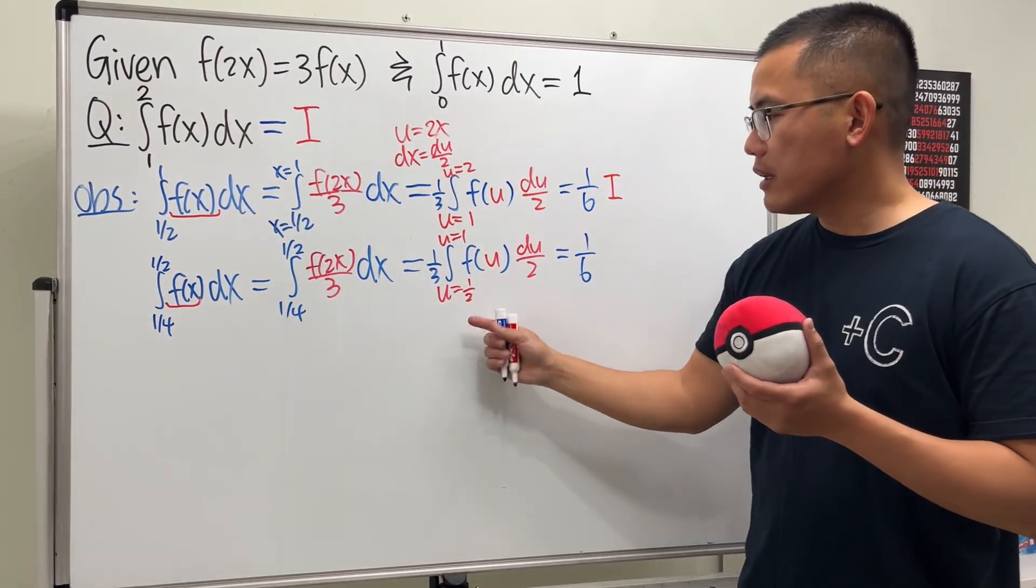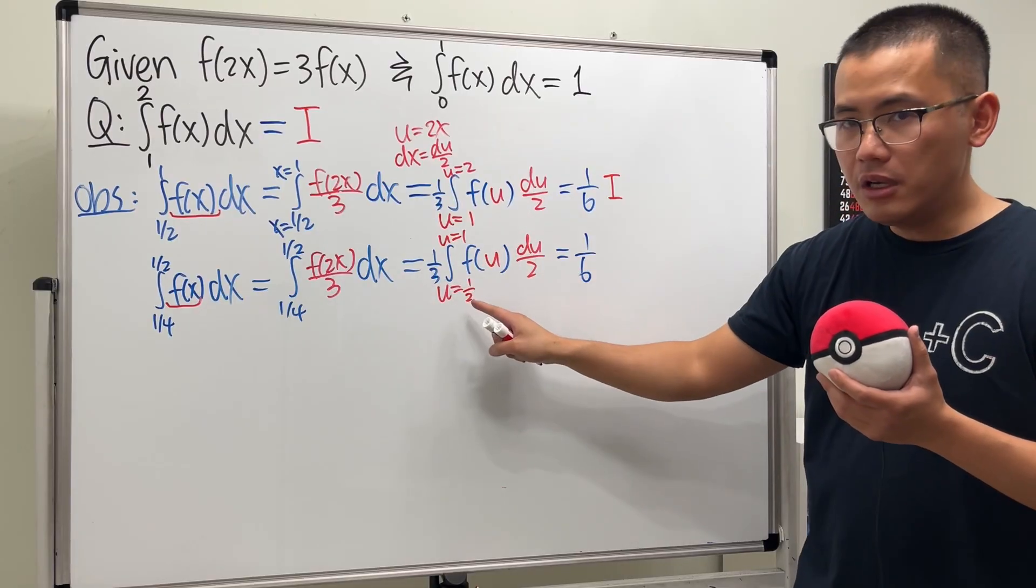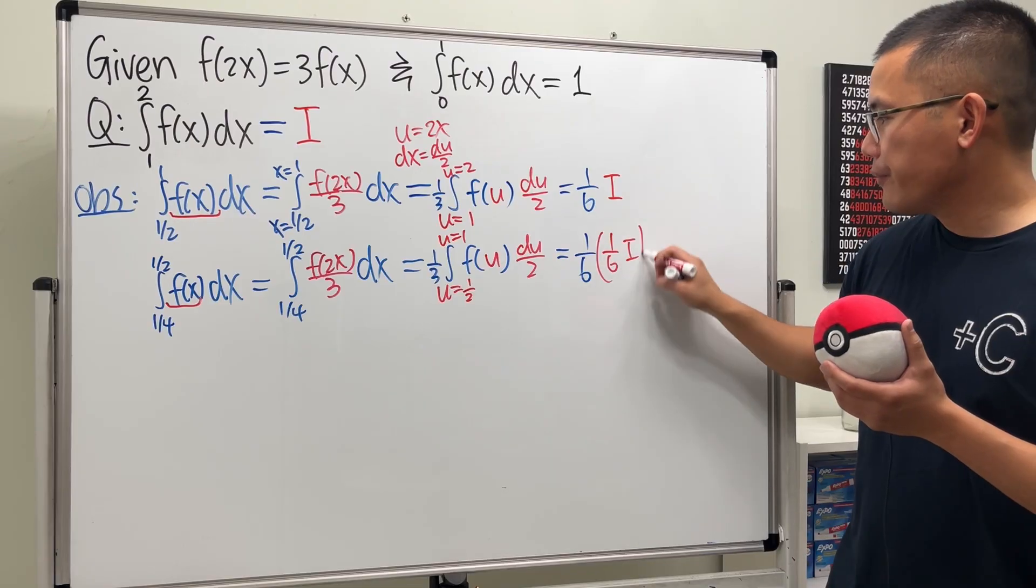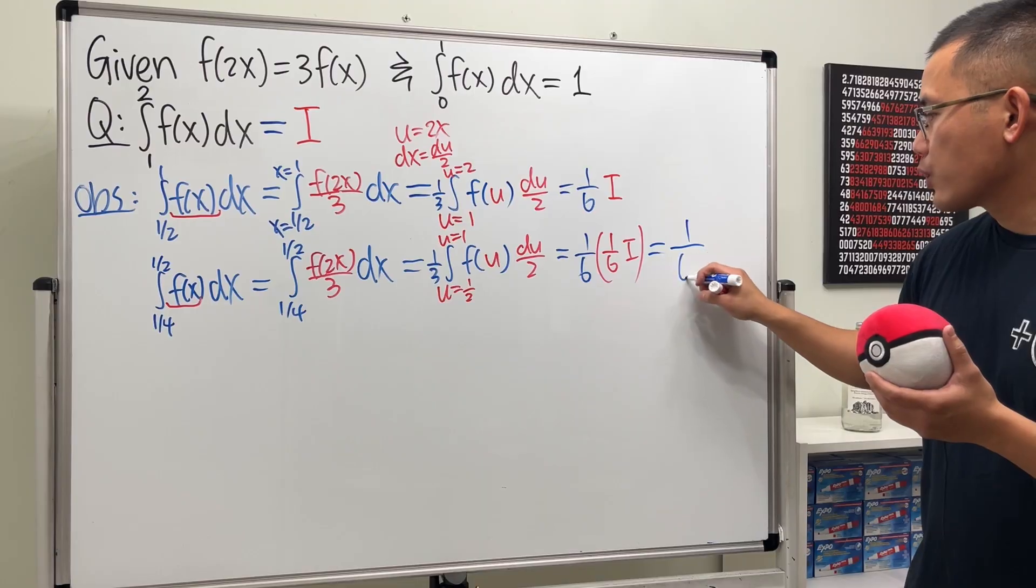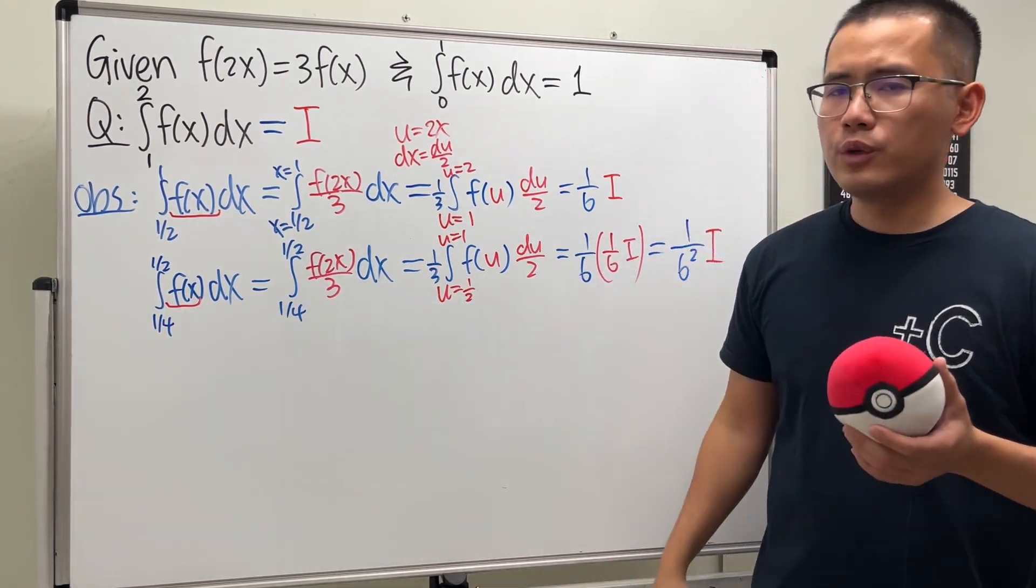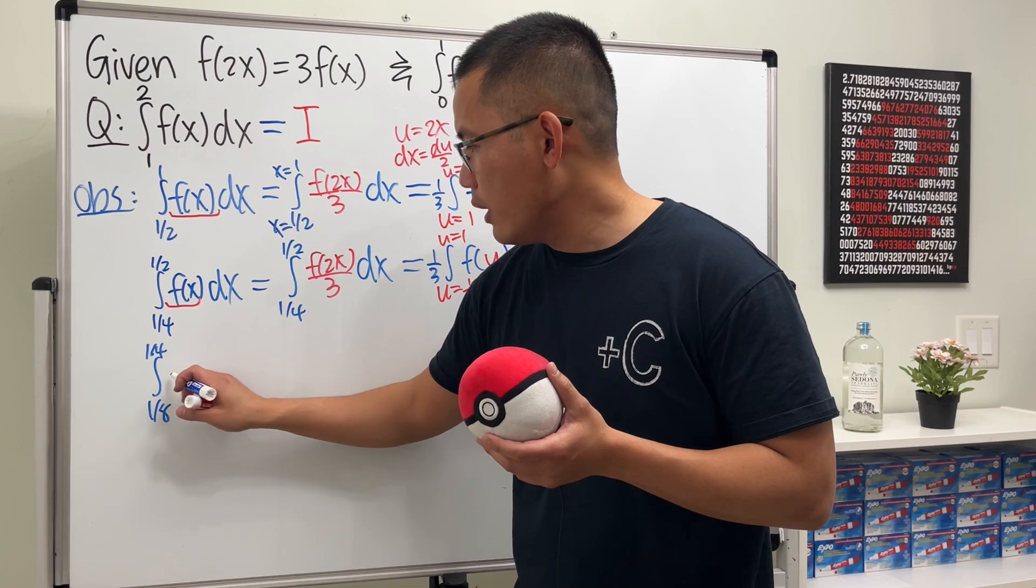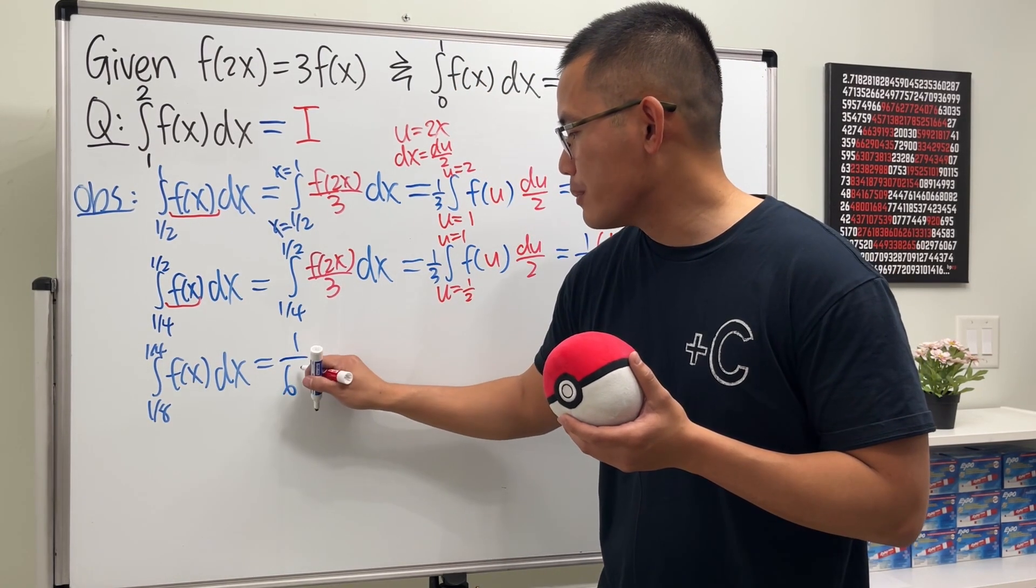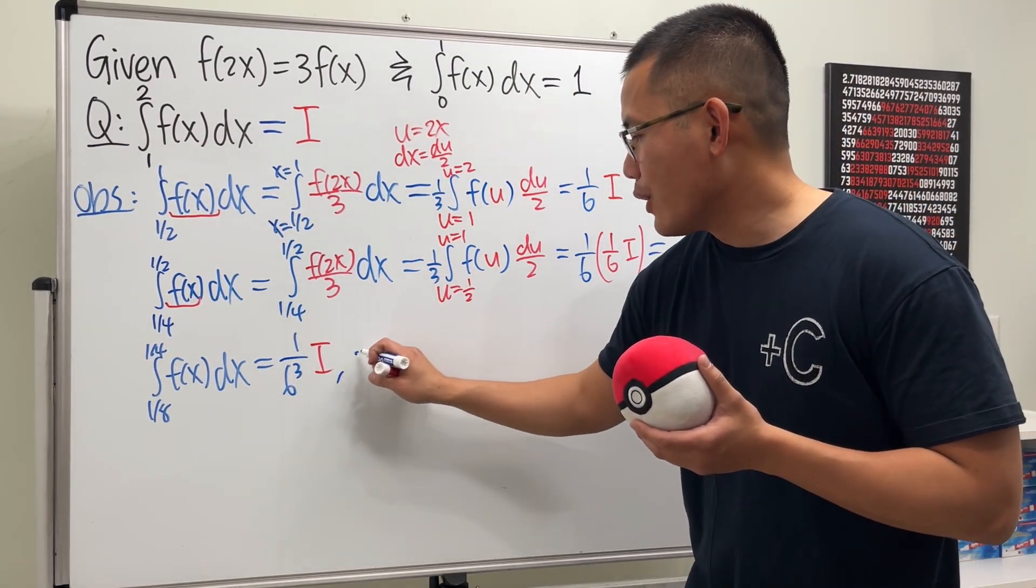And we are going to use the same substitution. This time, though, we have 1 over 6, just like earlier. But, this integral is the integral going from 1 half to 1 of the function f. So, it's not just i, but rather, we will have to utilize what we did earlier. So, the rest of the integral here is actually 1 over 6i. Like so. And now, we can see that this right here is just going to be 1 over 6 squared times i. Cool. And you can imagine, we can just keep on going with the same thing, right?